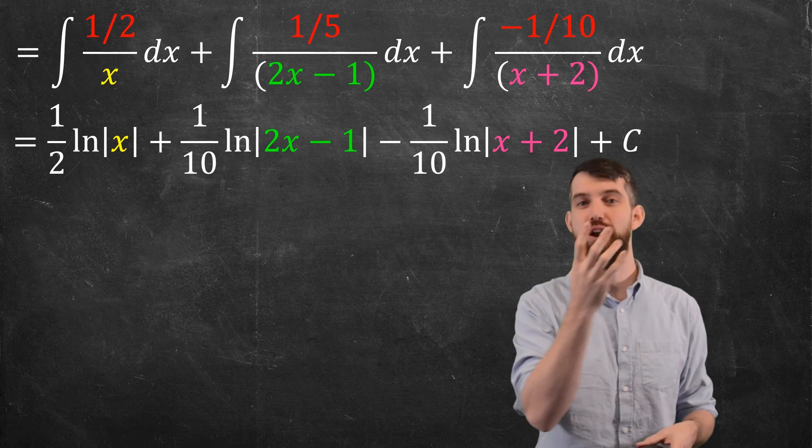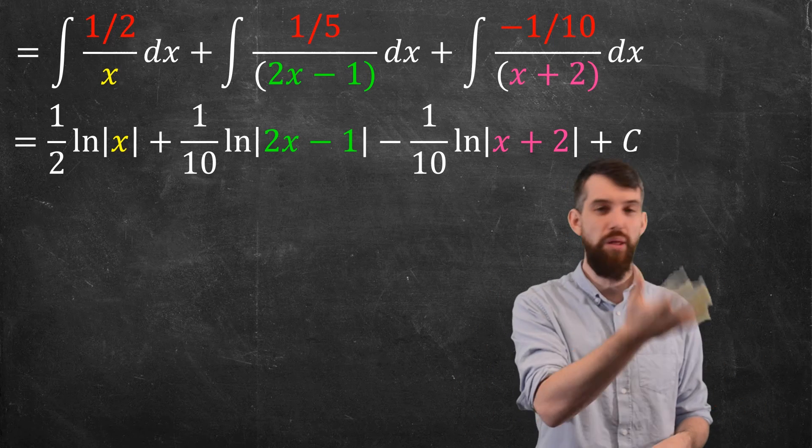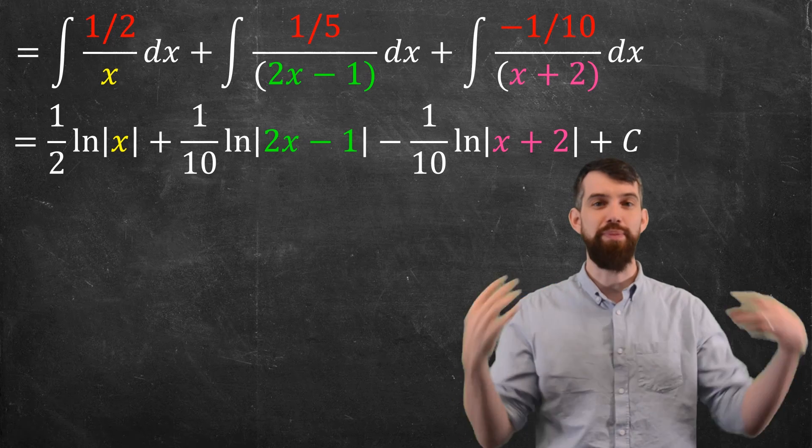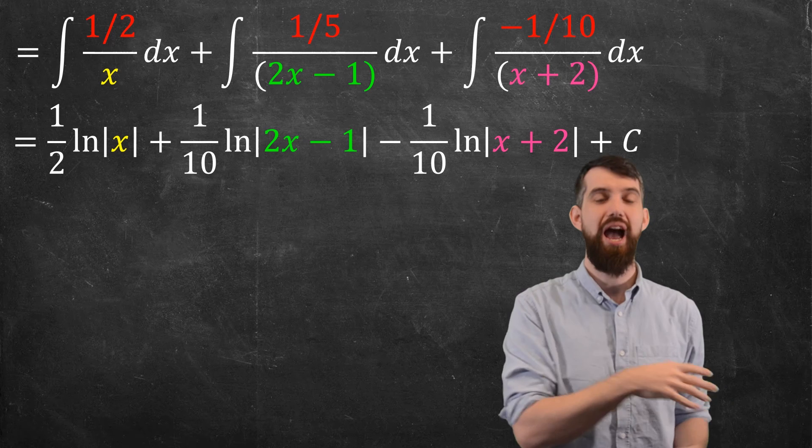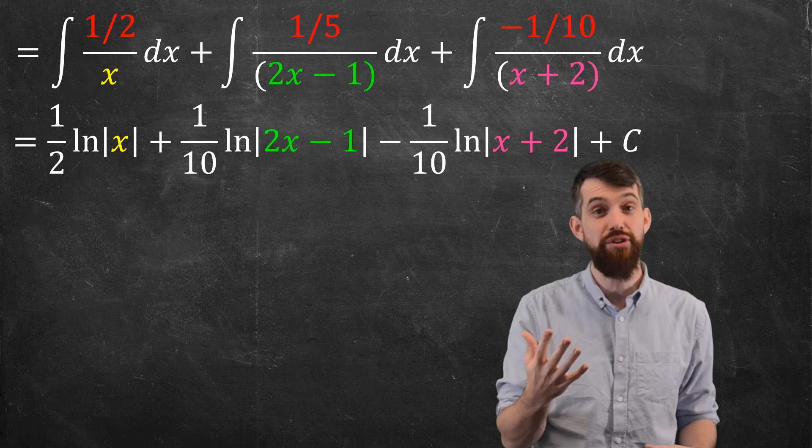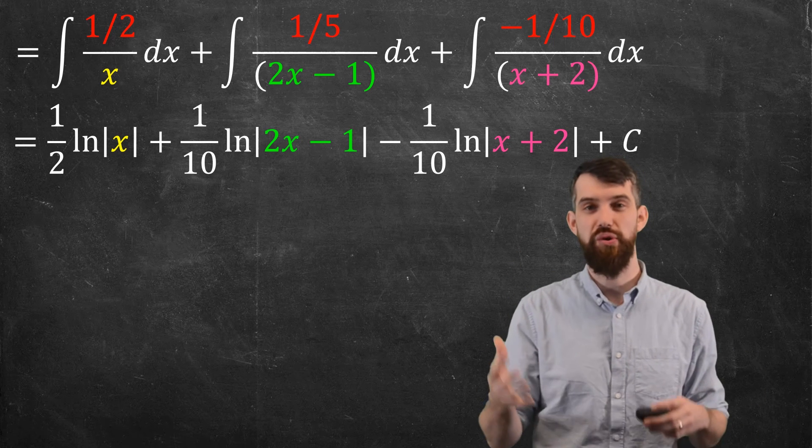So indeed, I have gone from that original rational function, the polynomial over polynomial, I split it up using this partial fractions algebra. I figured out my coefficients, my abc, and when I did that, I got something I could integrate, and now I've gotten the function after I integrate.